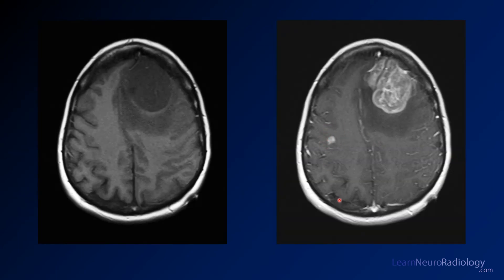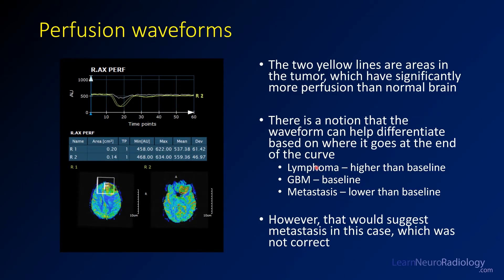Now a little bit about perfusion: there's the notion that you can use dynamic susceptibility perfusion to distinguish metastasis, lymphoma, and glioblastoma by looking at the waveforms for different regions of interest. If the signal doesn't return to baseline, you have a leaky blood-brain barrier and you're more likely dealing with metastasis — ending up lower than baseline suggests metastasis. GBM will return to baseline, and lymphoma will gradually creep above the baseline. You can see that here, but it's just a minor factor and I wouldn't let it change your differential very much.